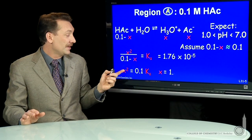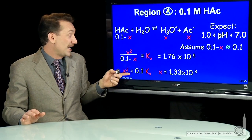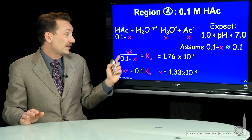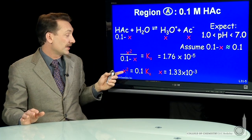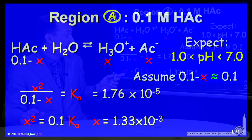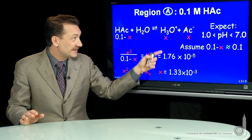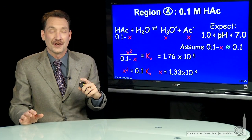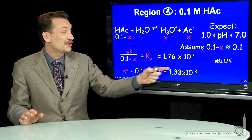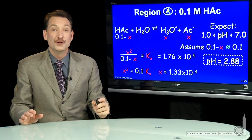So if I make that assumption, then the reaction simplifies. I don't have to calculate a quadratic solution. I can calculate this solution here, x squared is 0.1Ka, or x is 1.33 times 10 to the minus 3. x is the H3O plus concentration. So I can calculate the pH directly from that. The pH is about 2.88.